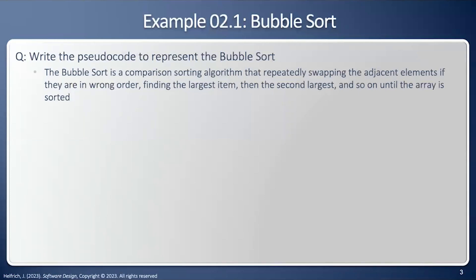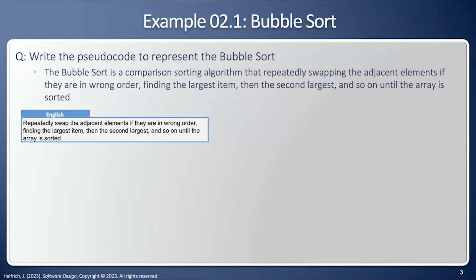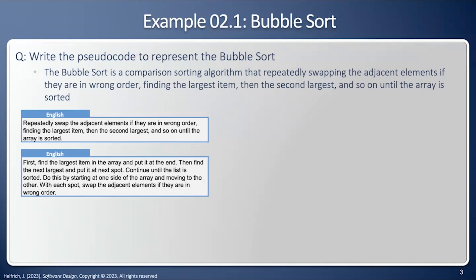We'll demonstrate this by taking a look at the bubble sort. First, we'll take a look at our English description. The bubble sort is a comparison sort algorithm that repeatedly swaps the adjacent elements if they are in the wrong order, finding the largest item, and then the second largest, and so on, until the array is sorted. We're going to start with this English description, basically copy-paste it from our problem definition. Then we're going to elaborate on that by introducing a little bit more detail.